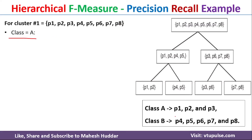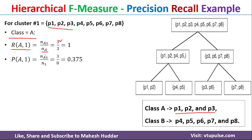Class A contains three objects: P1, P2, P3. The recall of class A with respect to cluster 1, R_A1, equals N_A1 divided by N_A. N_A1 is the number of objects of class A present in cluster 1. All three — P1, P2, P3 — are present in cluster 1, so the numerator is 3, divided by N_A which is also 3, giving recall equal to 1. Precision of A1 equals N_A1 divided by N1, which is 3 divided by 8, equal to 0.375. The F-measure of A1 equals 2 times 1 multiplied by 0.375, divided by 1 plus 0.375, which equals 0.55.